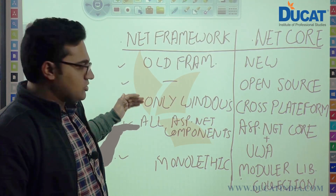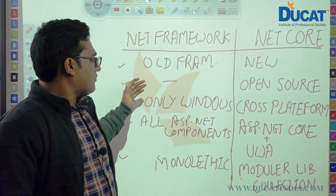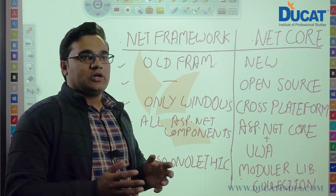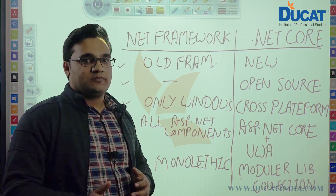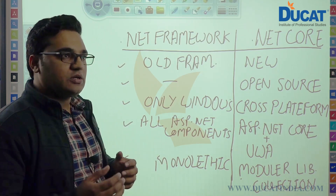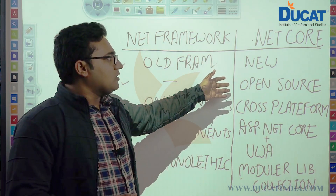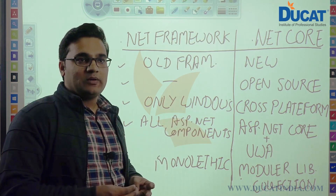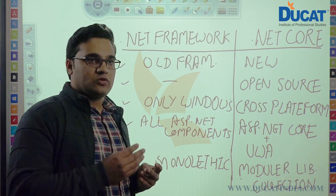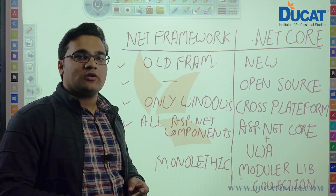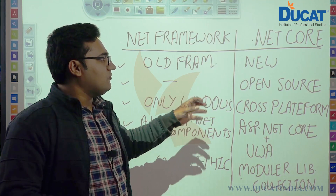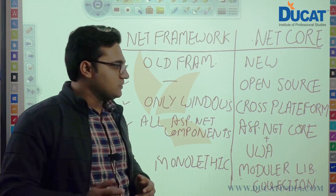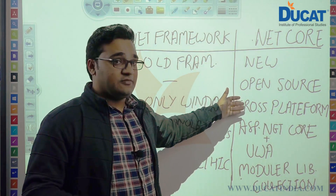One more major difference: .NET Framework was only for Windows, so applications created in .NET Framework can be published and used only on Windows operating system. .NET Core is cross-platform — any application built in .NET Core can be used on multiple platforms whether it is Windows, Linux, or Macintosh. It's not platform dependent.